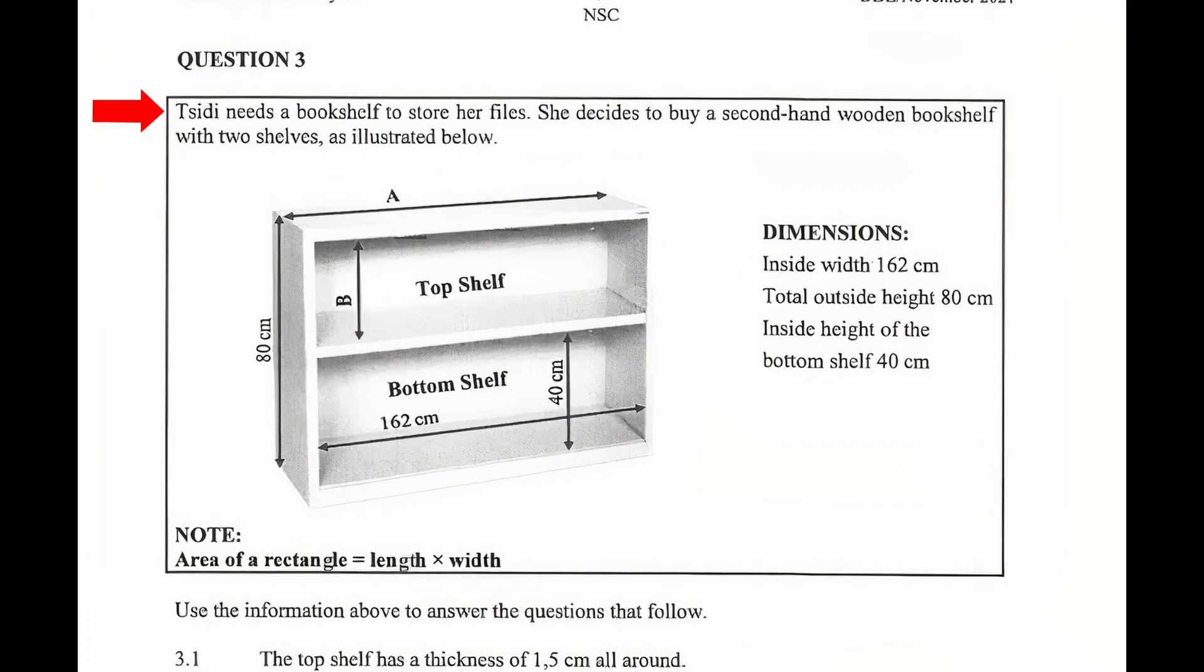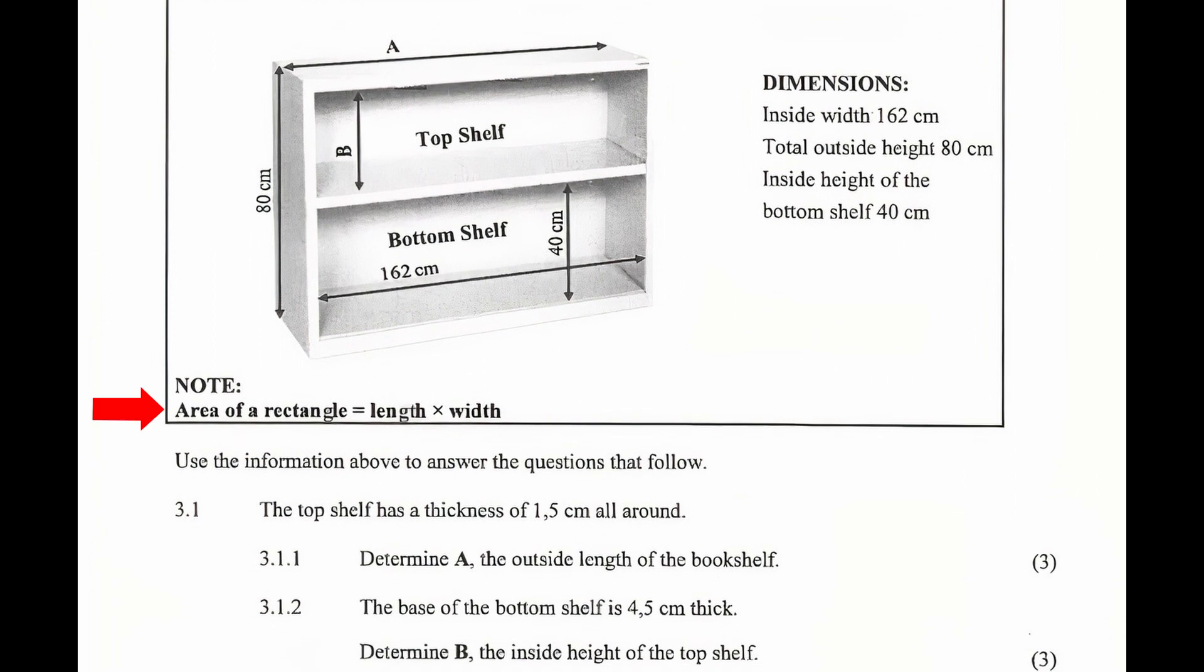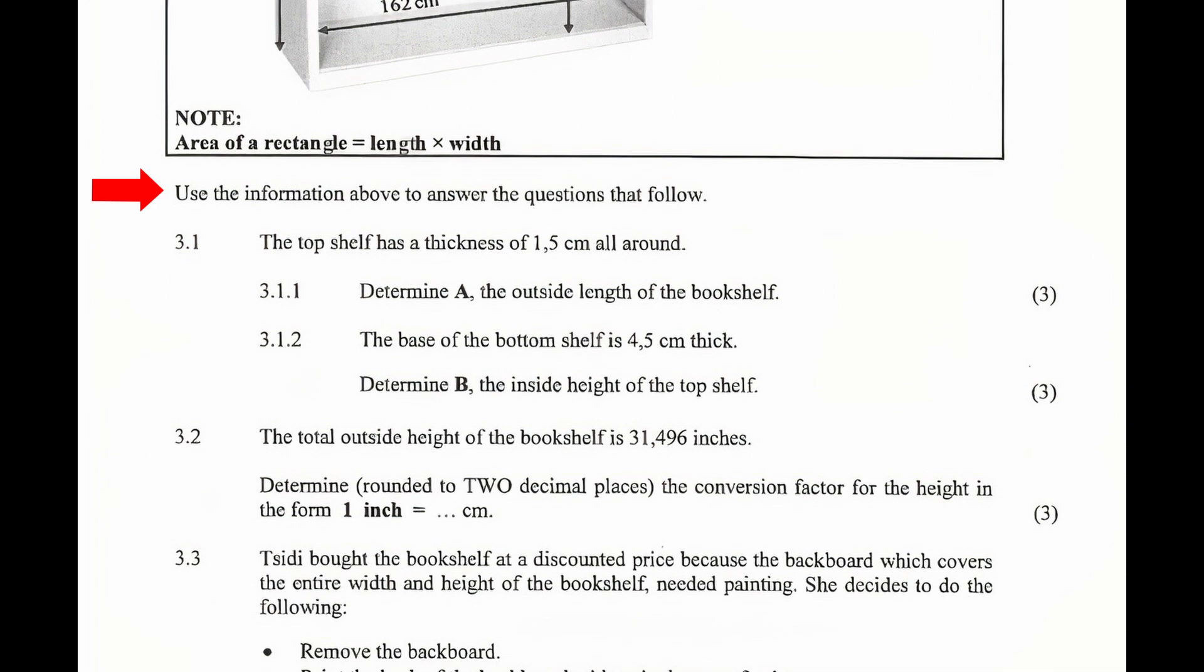Question 3: Sidi needs a bookshelf to store her files. She decides to buy a second-hand wooden bookshelf with two shelves as illustrated below. The illustration shows a bookshelf with one outside dimension and two inside dimensions. The outside length of the bookshelf is labelled an unknown value A and the inside height of the top shelf is labelled an unknown value B. We are given a note that states that the area of the rectangle equals the length multiplied by the width. We are instructed to use the information above to answer the questions that follow.